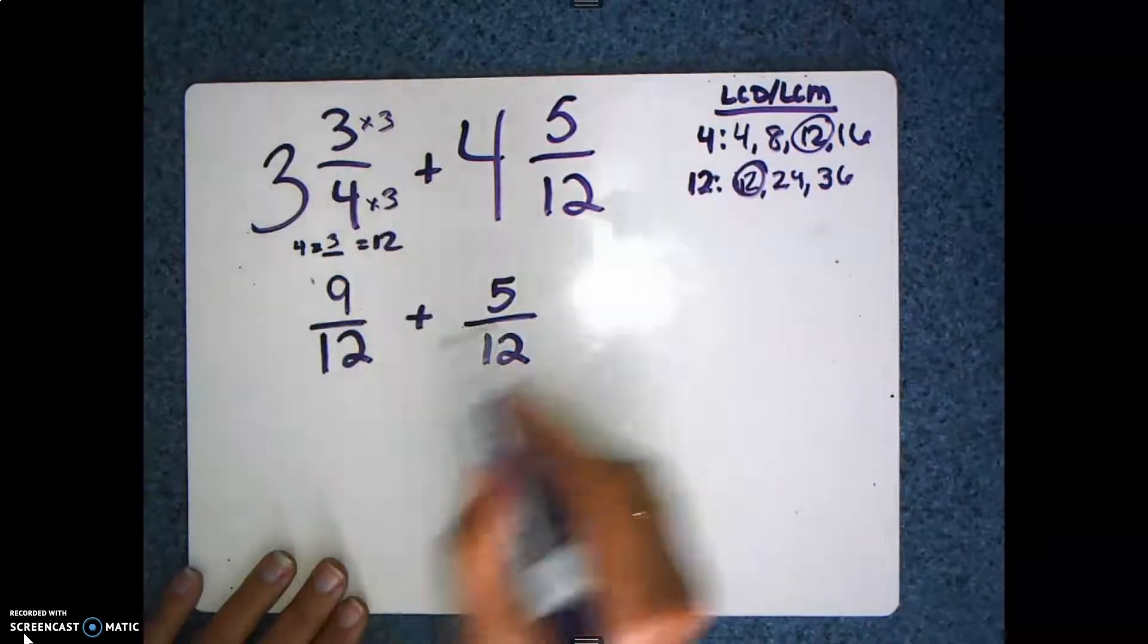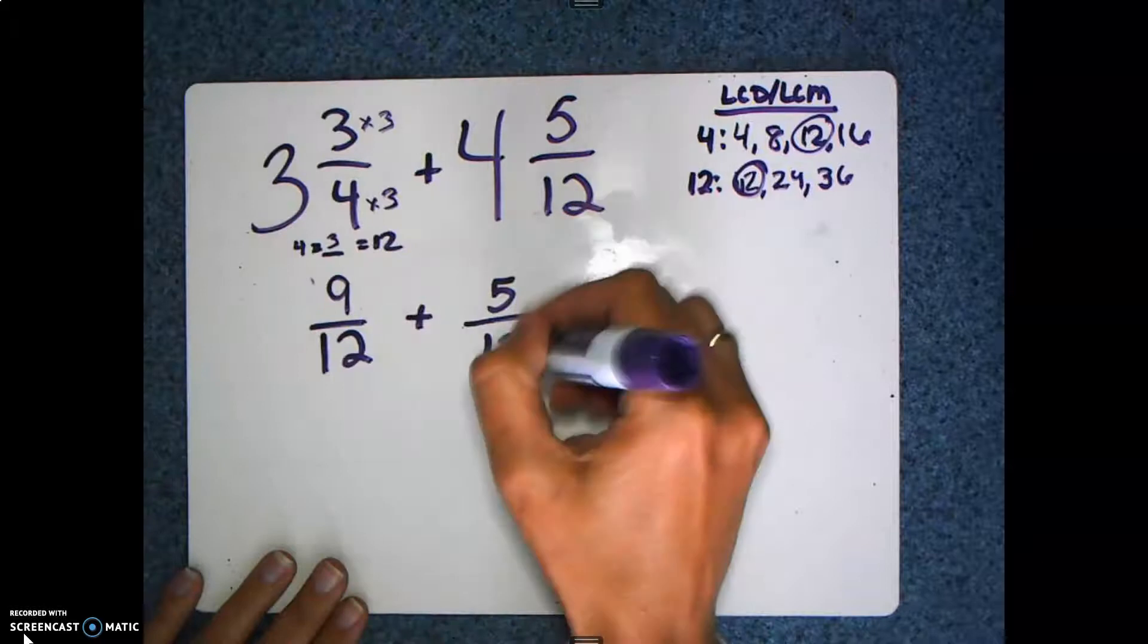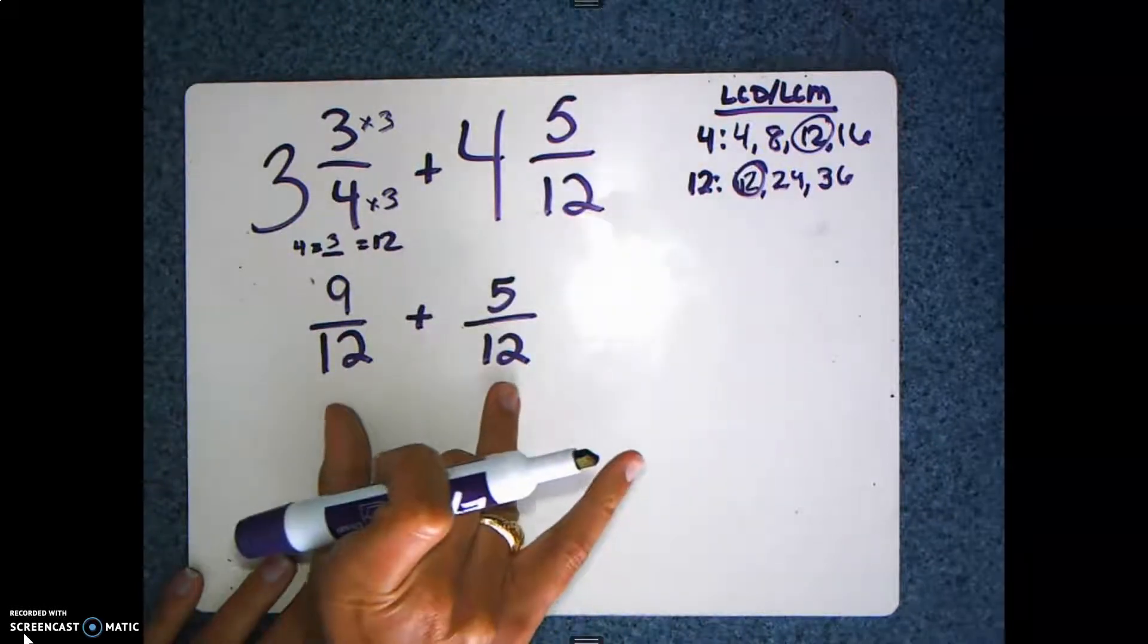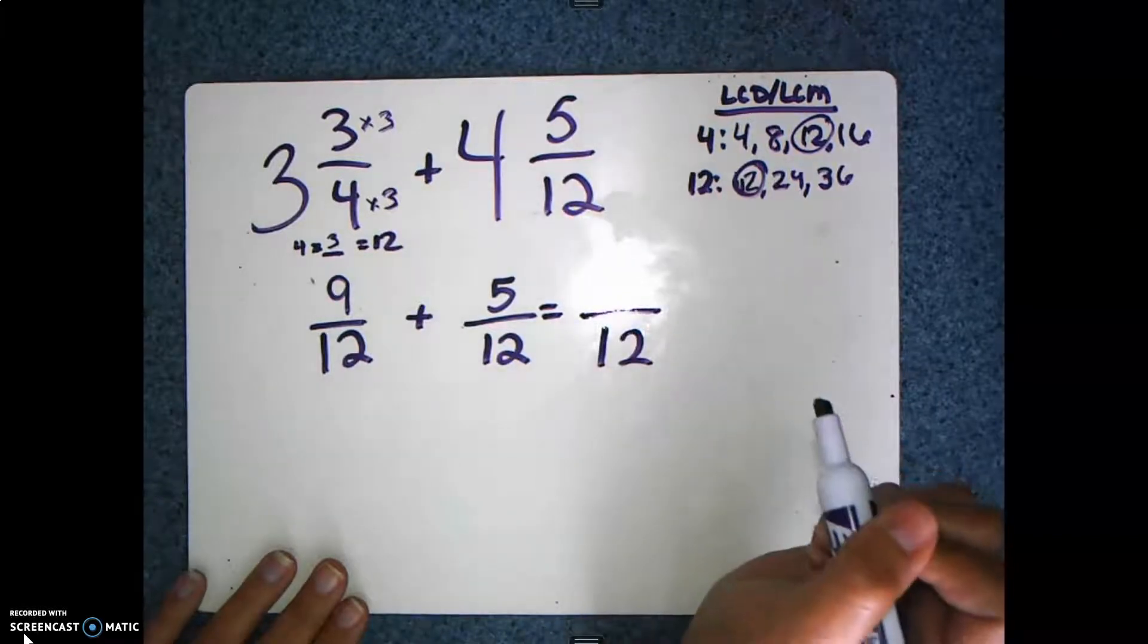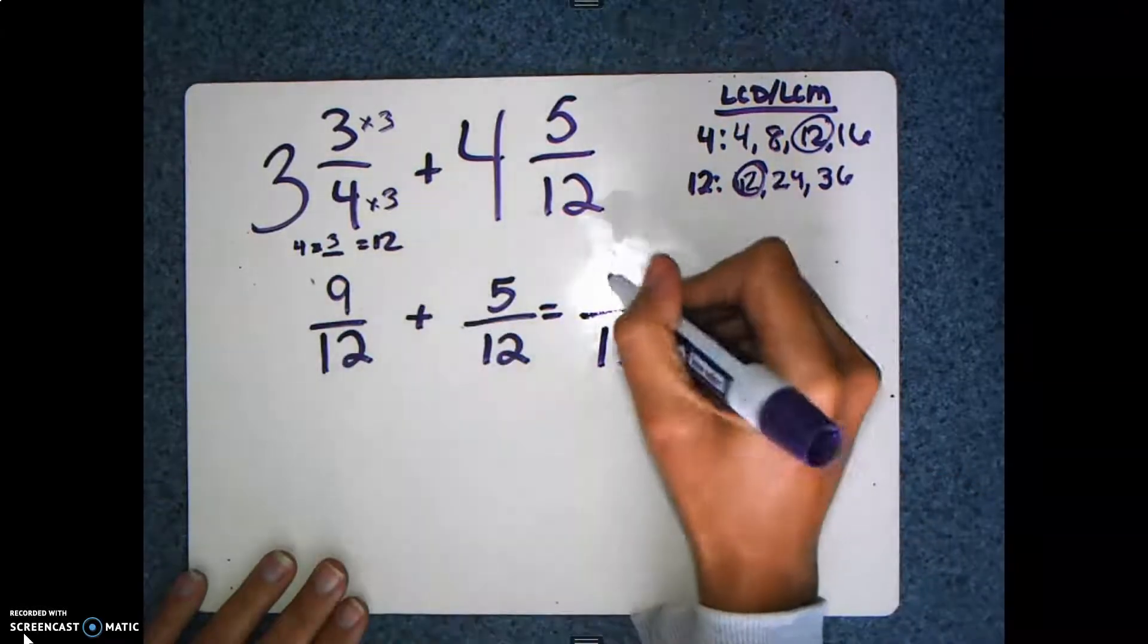So now that we have equivalent fractions to these fractions, these are equivalent. Now that these have the same denominator, I can add these together. So my twelfths stays the twelfths, and I add 9 plus 5, which I get 14.